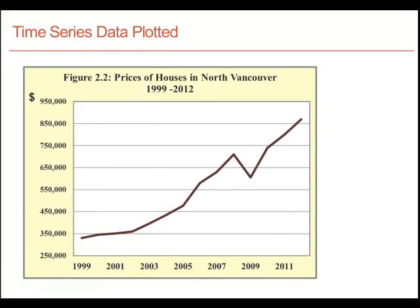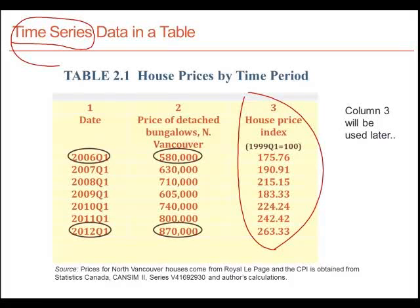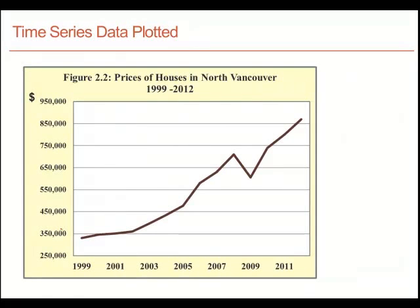We could also represent these data by a plot or a graphic. If we took all the values from the previous table — seven values between 2006 and 2012 — and tabulated these values on a graph, we would get the diagram shown here. In 2006, the value of the average house price was $580,000, as seen in the preceding table. Each point in this graphic represents a combination of a time period and a price. Here we have the time series data represented in graphical form, with all combinations of time and house value plotted and joined up.